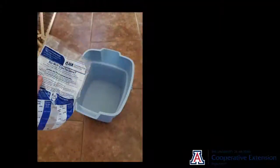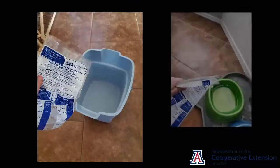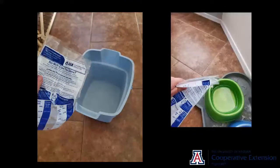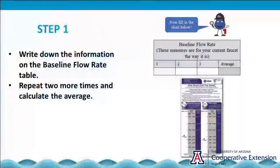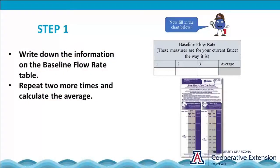Empty the water into a bucket or a large container for later use. Write your findings on the baseline flow rate table found in your booklet under step 1. Repeat the procedure 2 more times, write your results, and calculate the average. This will give you the average flow rate.